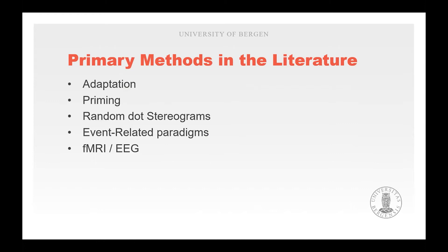Adaptation presents identical stimuli to participants until the brain is used to them, then presents a slightly different stimulus to investigate if the brain can detect that specific difference and which area is responsible. Priming is also very useful in stereoscopic research, as it can nudge the brain to view stimuli in a certain way — for example, an ambiguous stimulus that can be seen as either 2D or 3D depending on what the participant is primed to do, allowing investigation of the true difference between 2D and 3D stimuli.